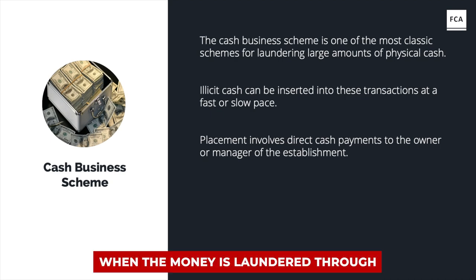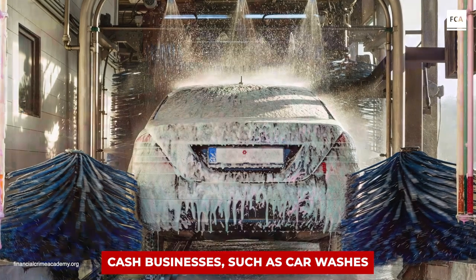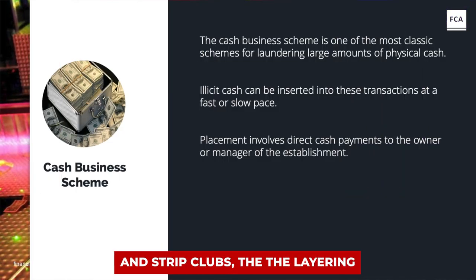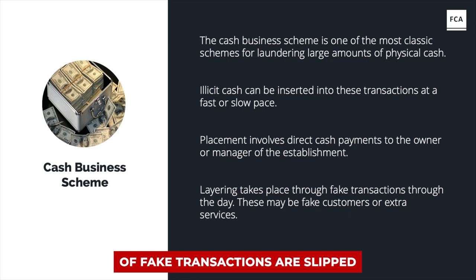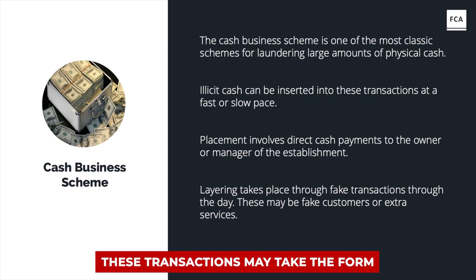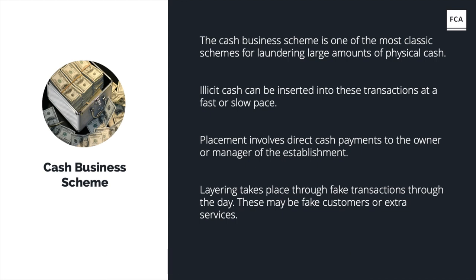When the money is laundered through cash businesses such as car washes and strip clubs, the layering stage takes place when dozens of fake transactions are slipped into the books throughout the day. These transactions may take the form of fake customers or extra services tacked on to legitimate transactions, with the difference added for the placed money.